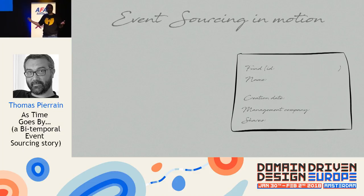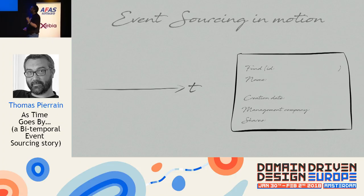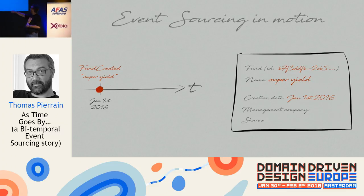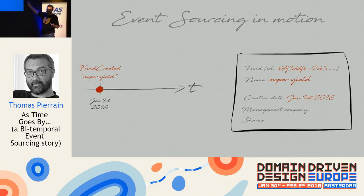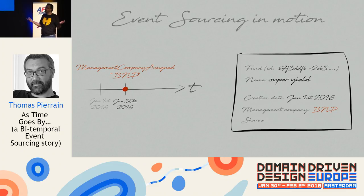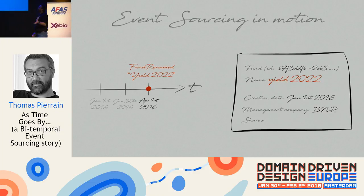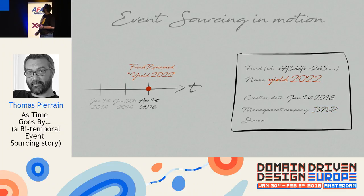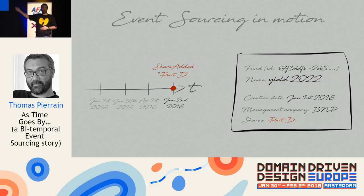In an event-sourced system, to get a business object I take a stream of events and apply them in sequence. The first event is 'fund created' — a dot on the timeline — and when I apply it, it changes the state with those values: creation date, name, etc. Then a 'management company assigned' event sets BNP. Then 'fund renamed' changes the name from 'Super Yield' to 'Yield 22'. Then 'share added', and so on.